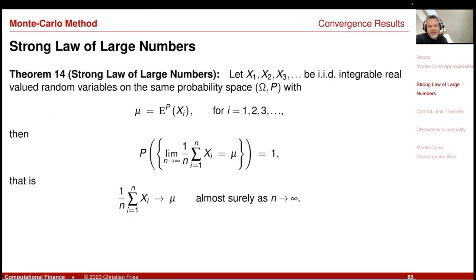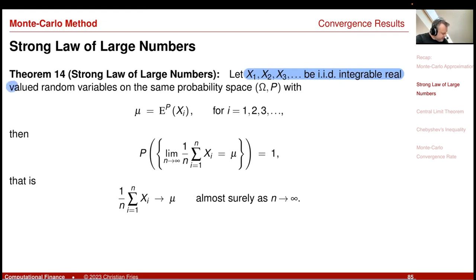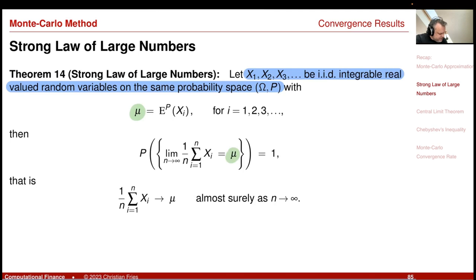The convergence result we start with is the strong law of large numbers — perhaps a recapitulation of a known result — which tells us that we converge in some sense. I have a sequence of IID random variables, integrable, real-valued, over the same probability space, where mu is my expectation. They are all IID, so the expectation of X_i is always the same. My Monte Carlo approximation — the Monte Carlo sum, 1 divided by n times the sum from i equals 1 to n of X_i — equals mu.